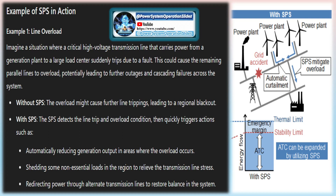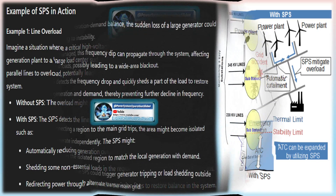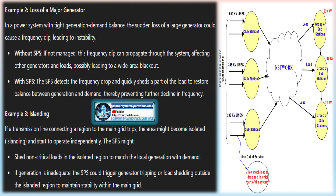Voltage instability is the failure of a power system to maintain steady acceptable voltages at all buses. Remedial actions include changing of generation, automatic shunt switching, control of series compensation, blocking of tap changer position of transformers, and under-voltage load shedding. Transient angular instability is the inability of the system to maintain synchronism. Preventive measures include breaking resistors, employing FACTS devices, reducing mechanical power driving the generator, fast valving, and disconnection of the generator.